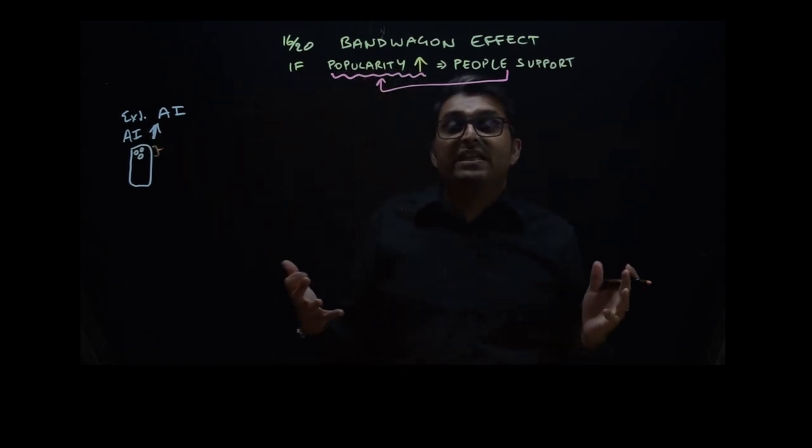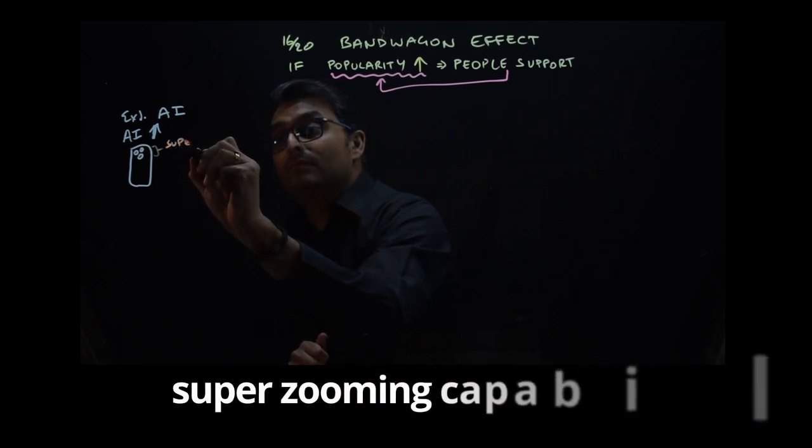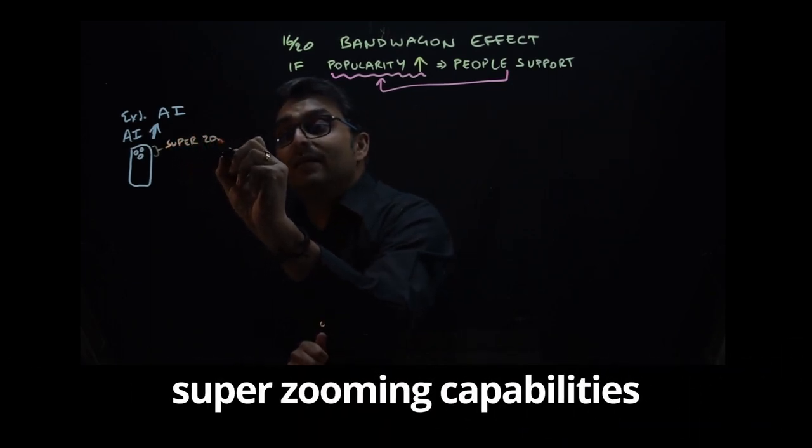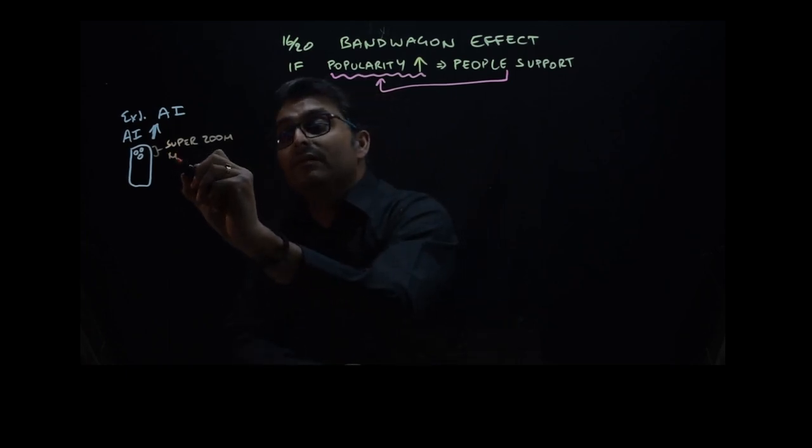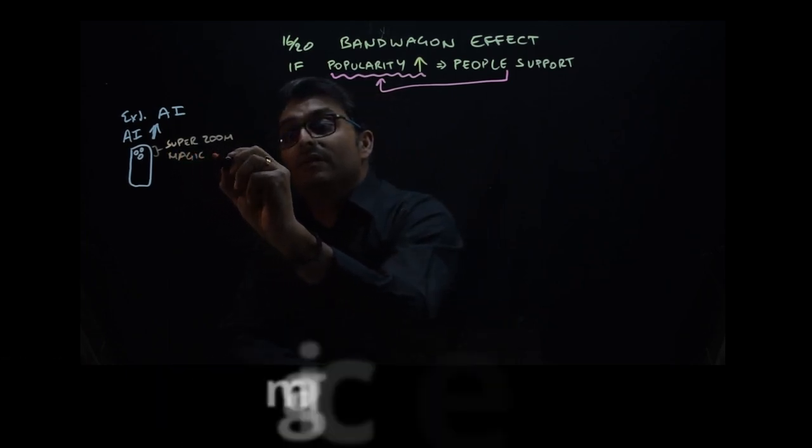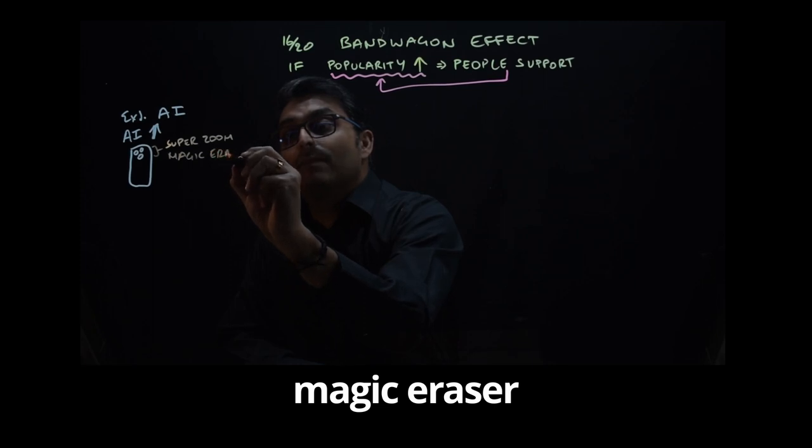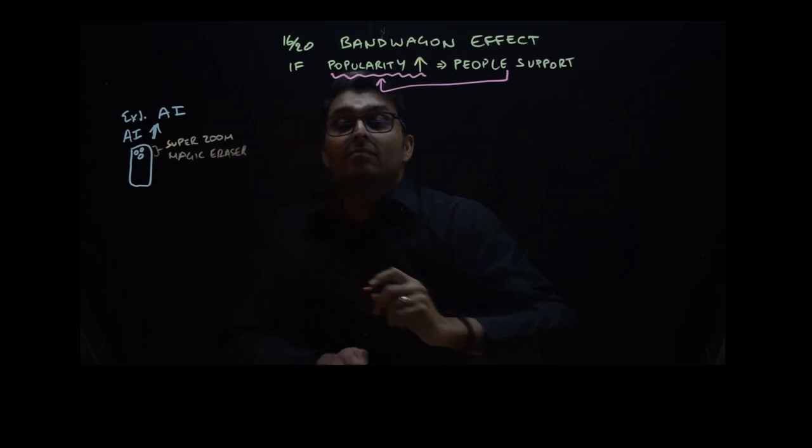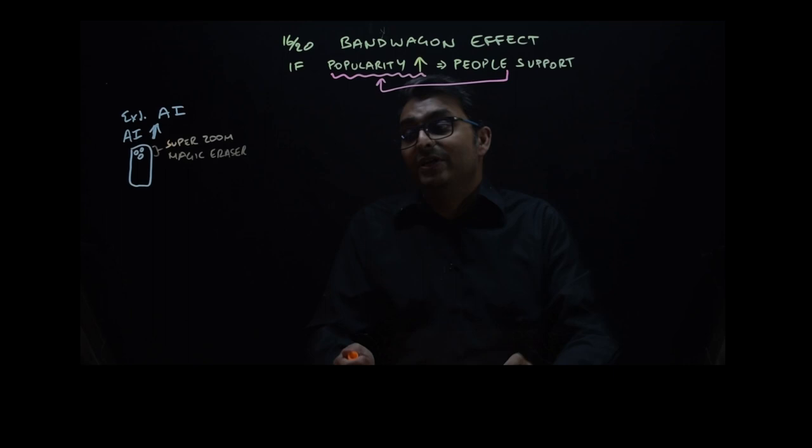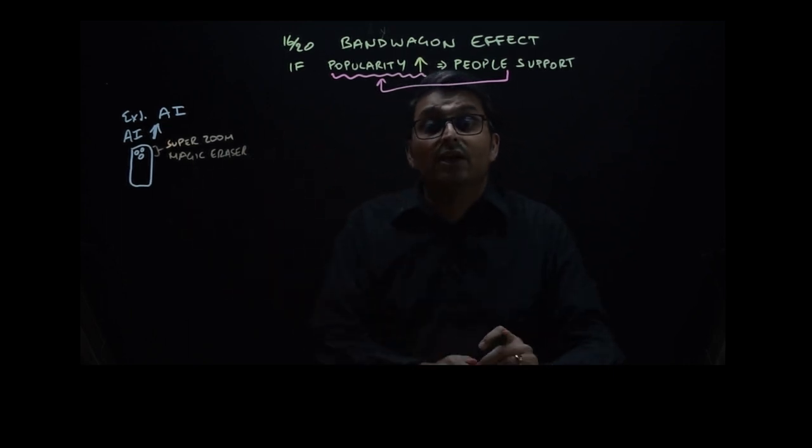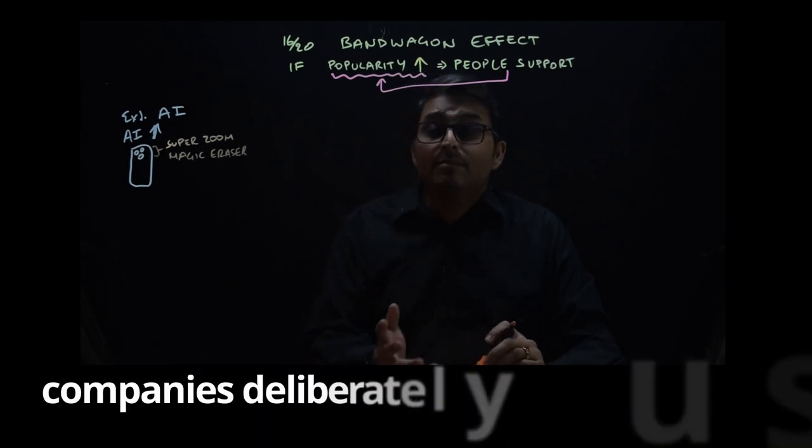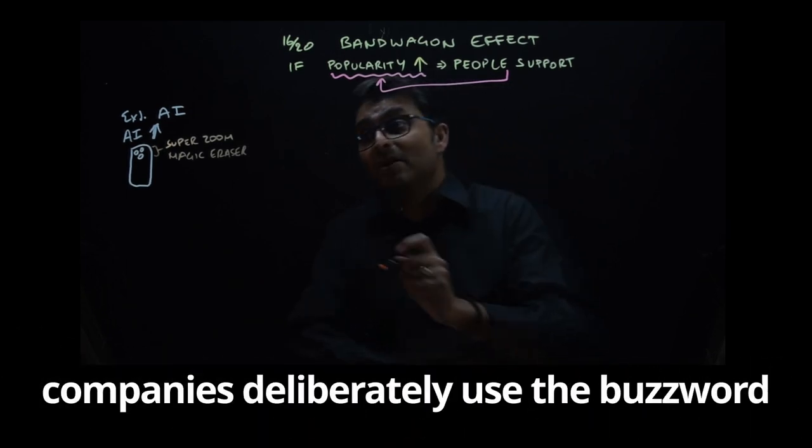Very recently we've seen mobile phones with various AI features in their camera technology - be that super zooming capabilities or even the magic eraser which removes objects from the background.